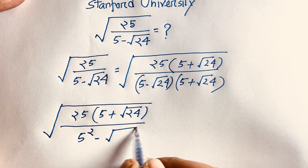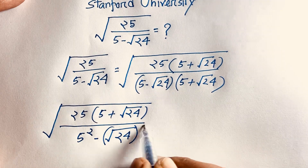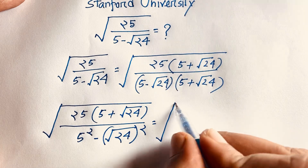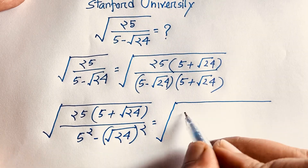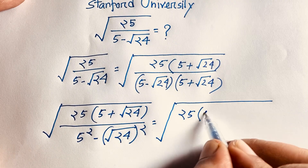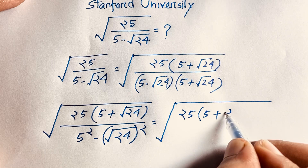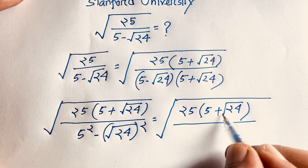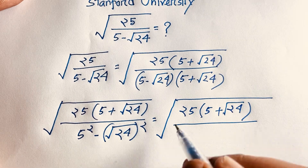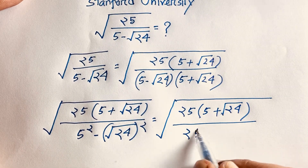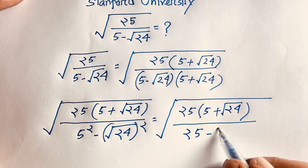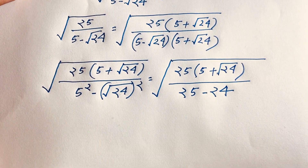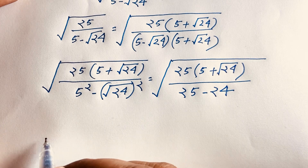So we have square root of [25 times (5 plus square root 24)] all over [5² minus (√24)²]. That gives us 25 minus 24 in the denominator. The square root cancels, leaving 24, so 25 minus 24 equals 1. This expression simplifies nicely.